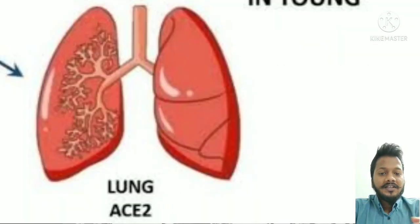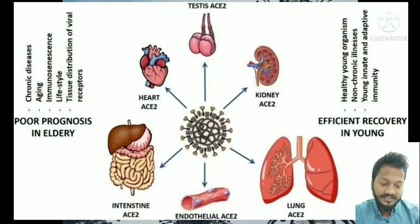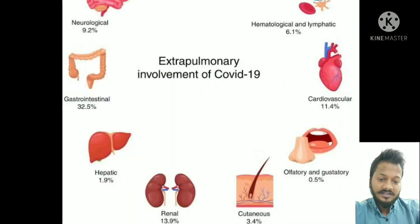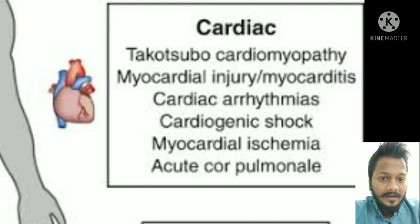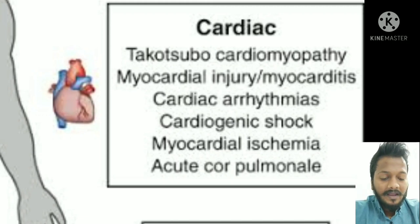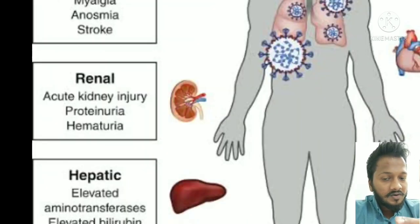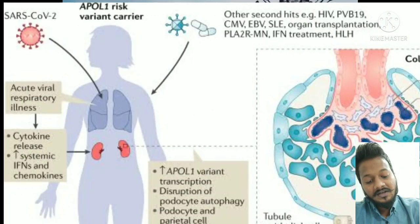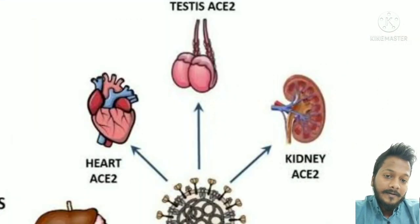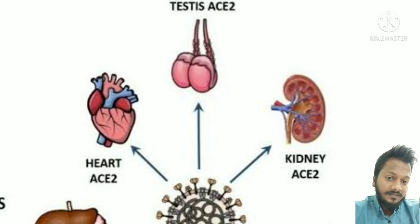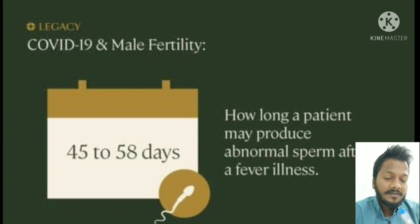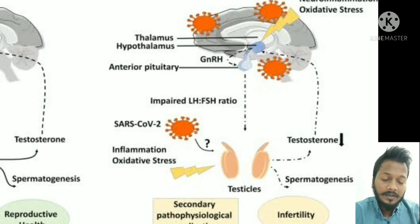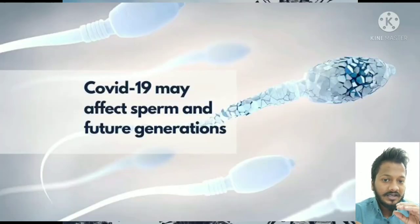As lungs are rich in ACE2 receptors, we initially see pulmonary manifestations. Various other organs also rich in ACE2 receptors lead to extra-pulmonary manifestations. Cardiac issues include Takotsubo cardiomyopathy, myocarditis, MI, and cardiogenic shock. Neurological issues include headache, dizziness, encephalopathy, stroke, and myalgia. Renal issues: AKI (acute kidney injury) and focal segmental glomerulosclerosis (FSGS) — patients with APOL1 gene are more likely to develop FSGS. Leydig cells in the testes are also rich in ACE2 receptors, so some studies suggest possible fertility issues — oligospermia and impotence in males — though not yet confirmed.